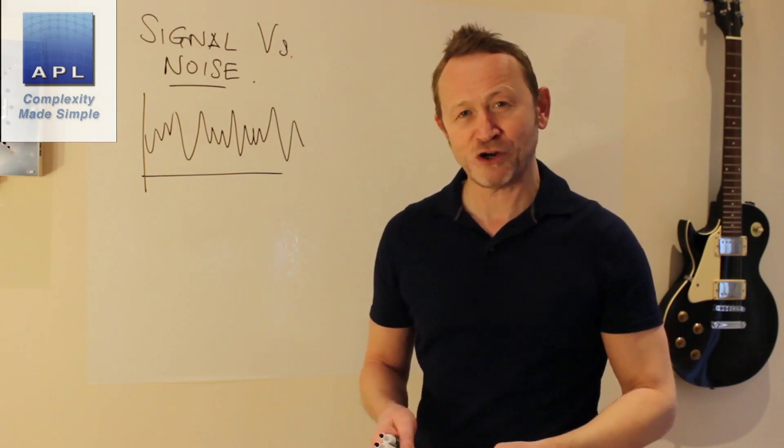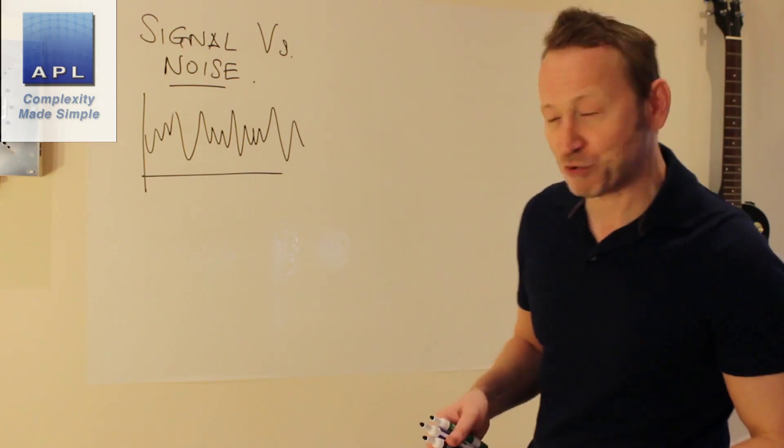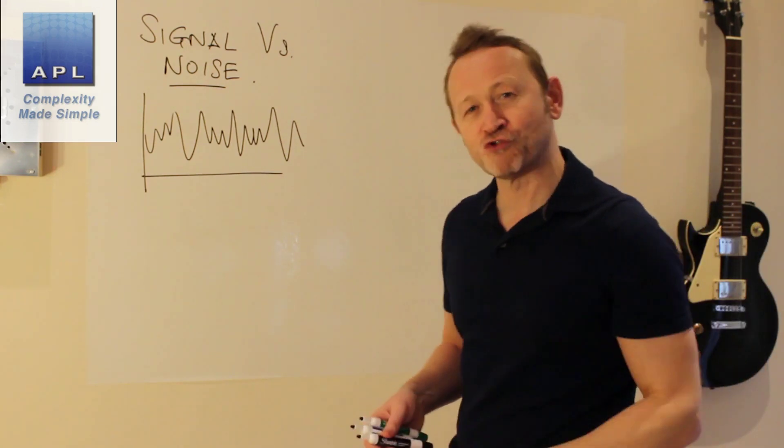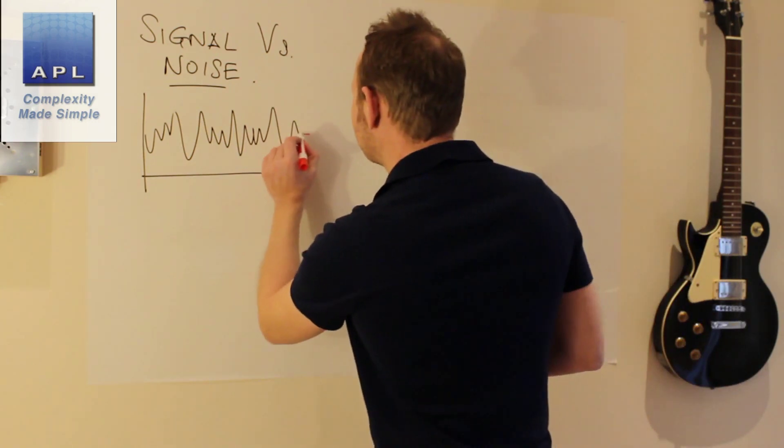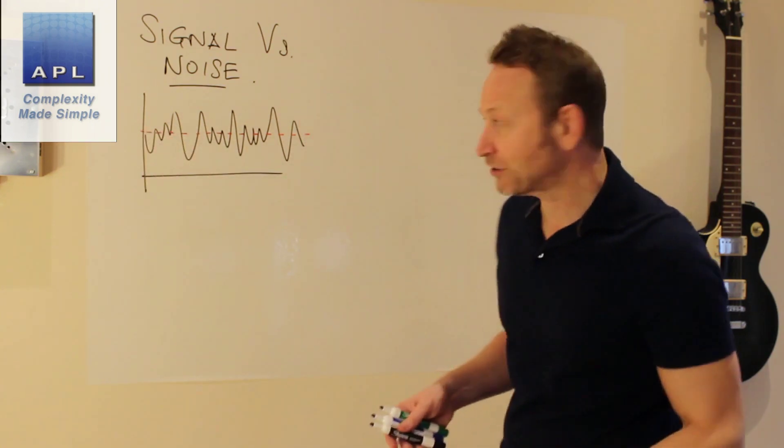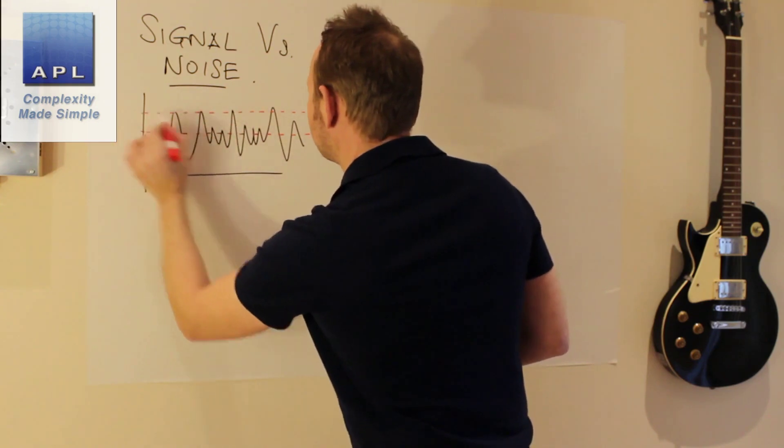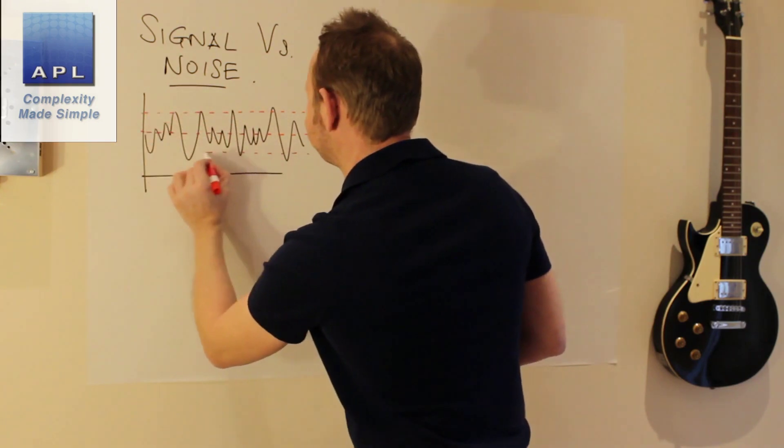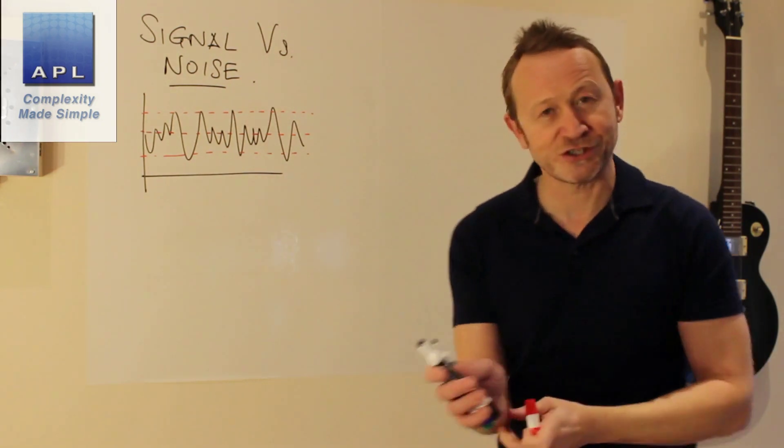In a manufacturing situation, what are we typically trying to do? We're trying to hit a nominal, trying to get this process between tolerances. So let's just drop those numbers on the graph. There's the nominal, the target that we're after. There's the upper tolerance. There's the lower tolerance.